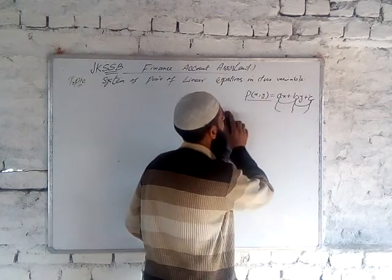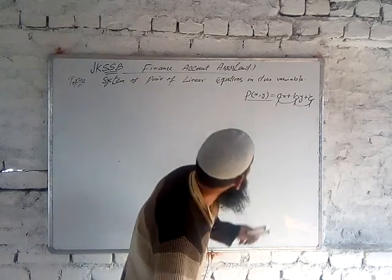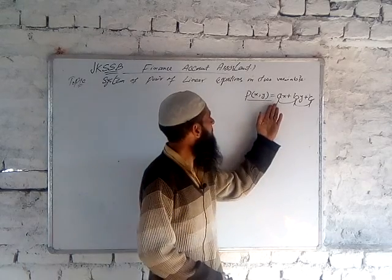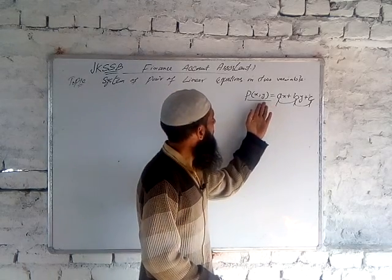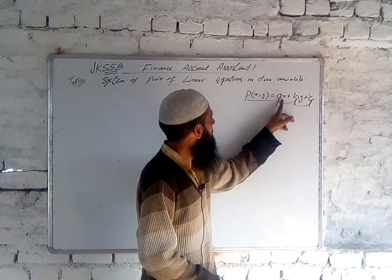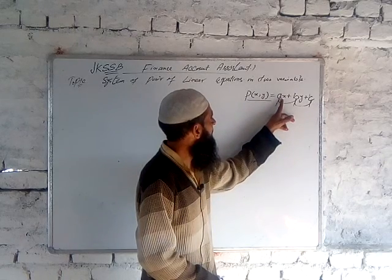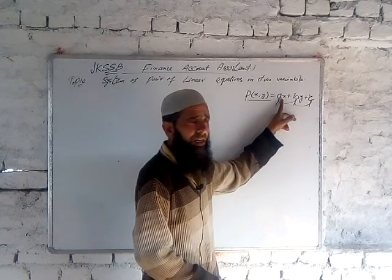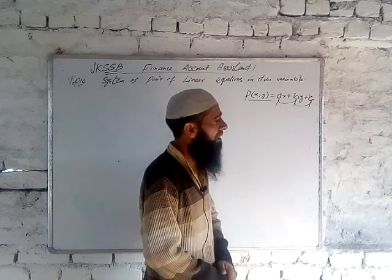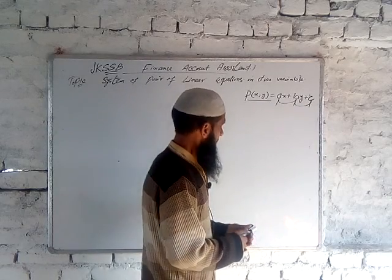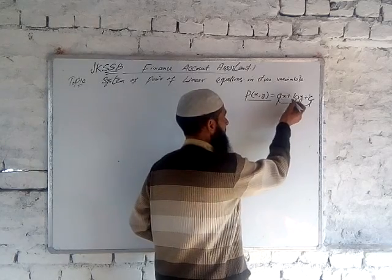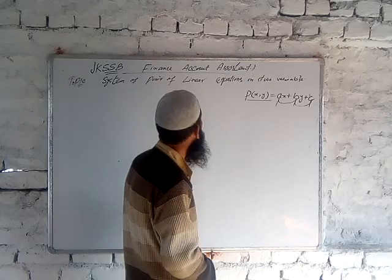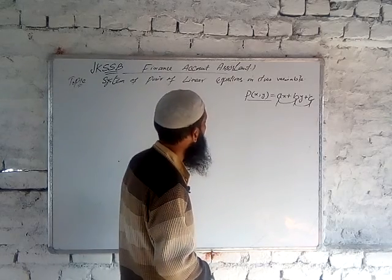A linear polynomial in two variables is denoted as p(x, y) = ax + by + c. Here, 'a' is called the coefficient of x, 'b' is the coefficient of y, and 'c' is the constant term. Here a, b, and c are real numbers.